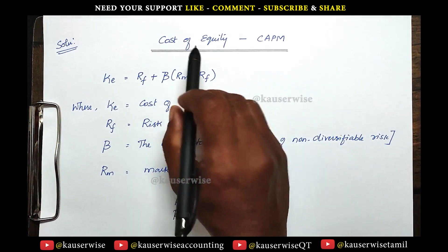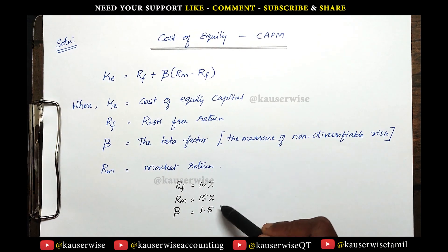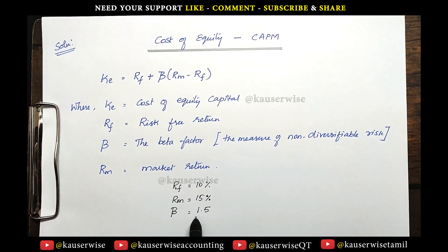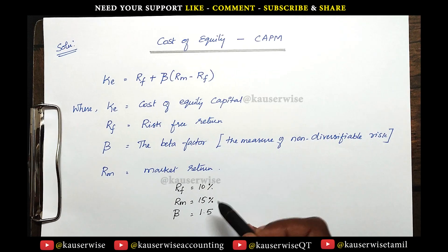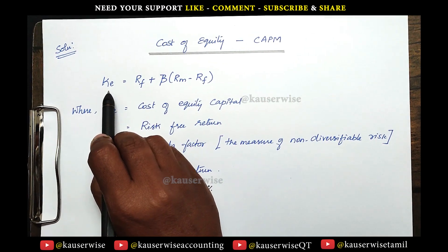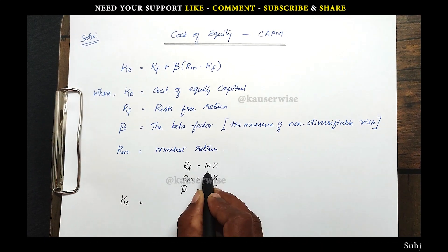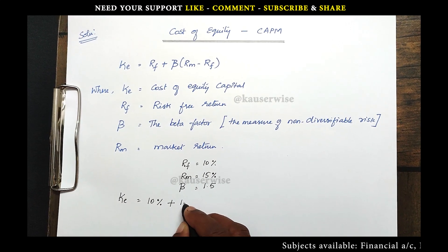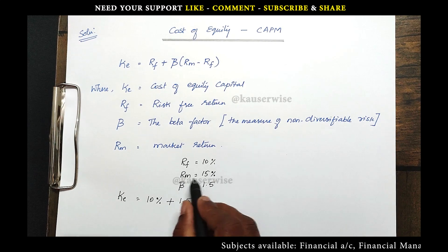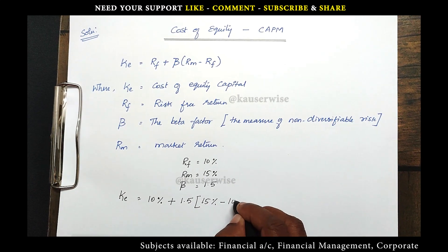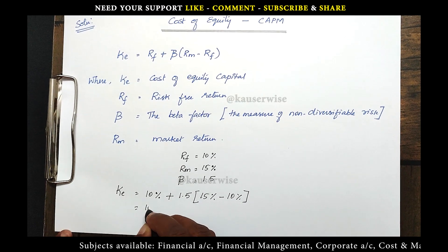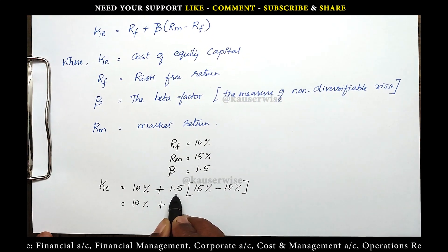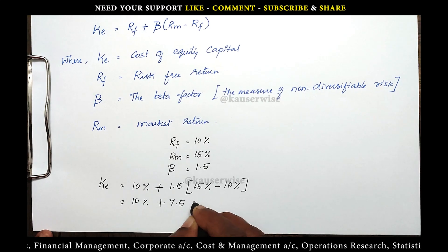According to our problem, all the values are given: RF is equal to 10%, RM 15%, beta value 1.5. Now substitute these values in the formula to find out the cost of equity. Cost of equity is equal to RF 10%, plus beta value 1.5, into RM 15% minus RF 10%. So 10% plus 15 minus 10 equals 5, and 5 into 1.5 gives 7.5%.